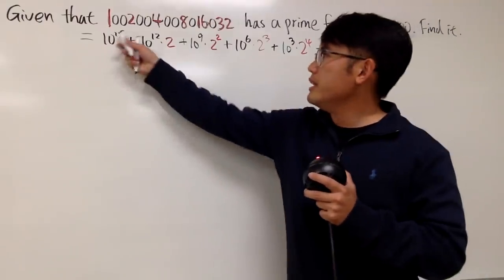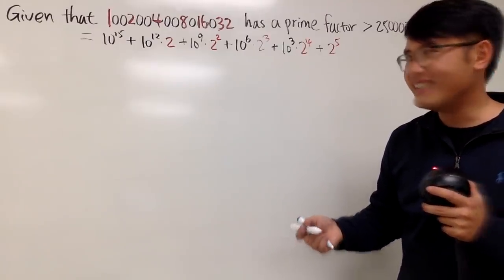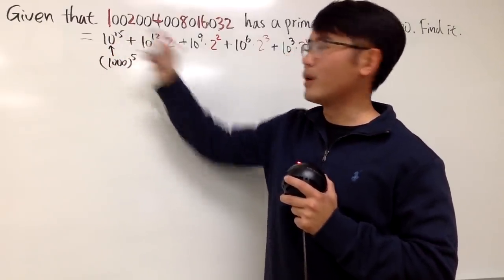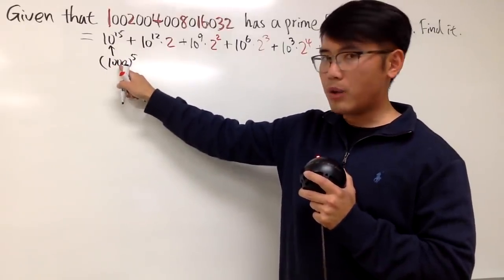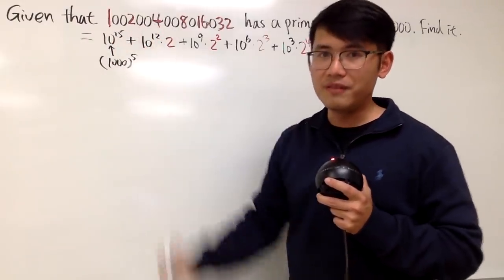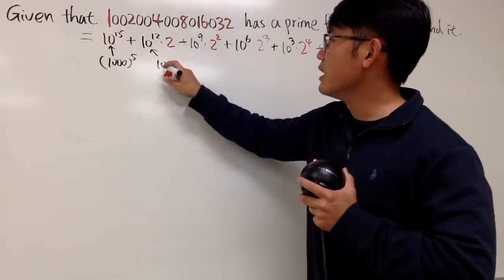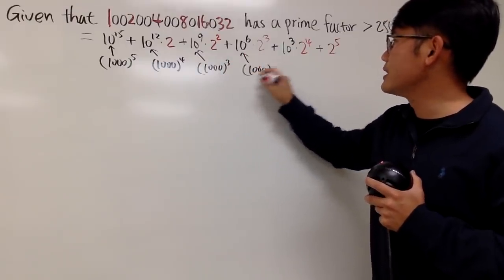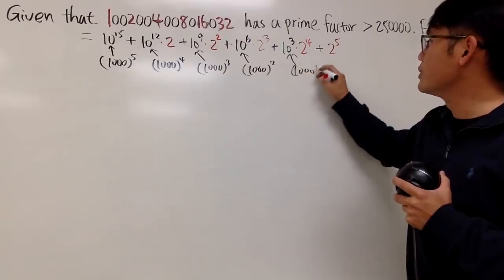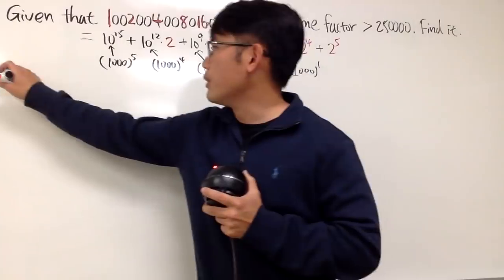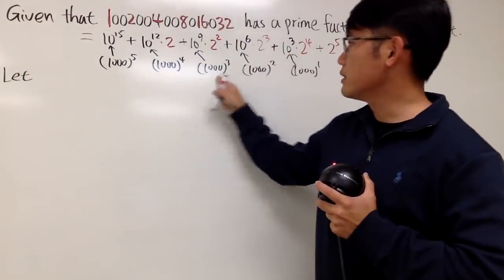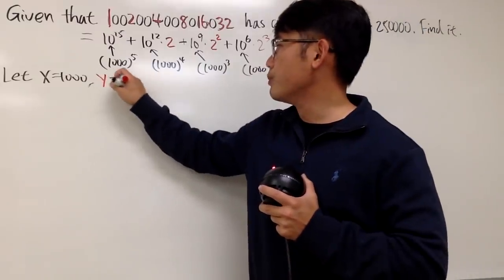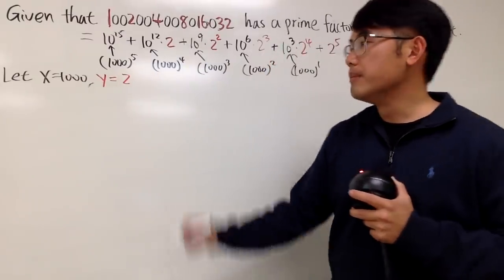And even better, the exponents on the powers of 10 — 15, 12, 9, 6, 3 — they are all multiples of 3. So in fact, we can look at 10 to the 15th as 1,000 to the 5th power, since that's 10 to the 3rd power to the 5th power. Likewise, 10 to the 12th is 1,000 to the 4th, 10 to the 9th is 1,000 to the 3rd, 10 to the 6th is 1,000 squared, and 10 to the 3rd is 1,000 to the 1st. So let x equal 1,000 and y equal 2.